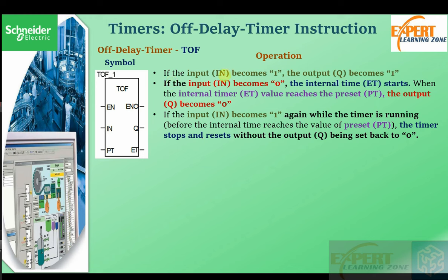Looking at the input pin IN: if the input becomes one, the output becomes one. If the input becomes zero, the internal timer will start. So a logic one on the input parameter sets the output to one, and if the input becomes zero the internal timer starts. When the internal timer equals the preset value, the output goes to zero.